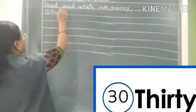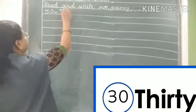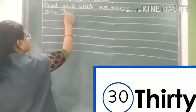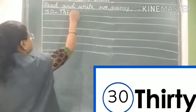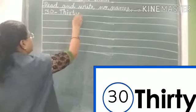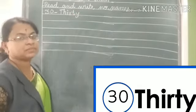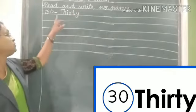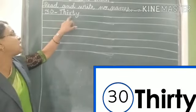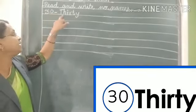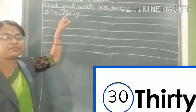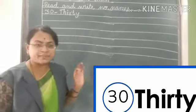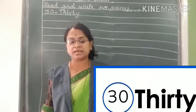So you write 30 T-H-I-R-T-Y. So you read with me T-H-I-R-T-Y, 30. This is the spelling of 30.